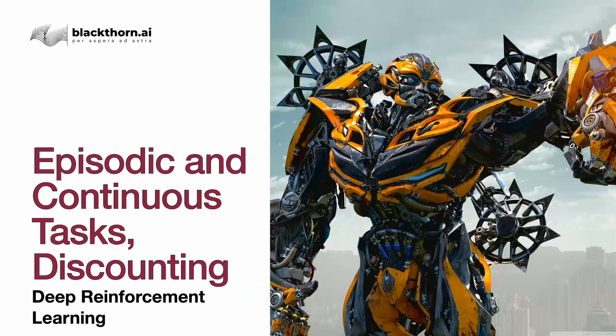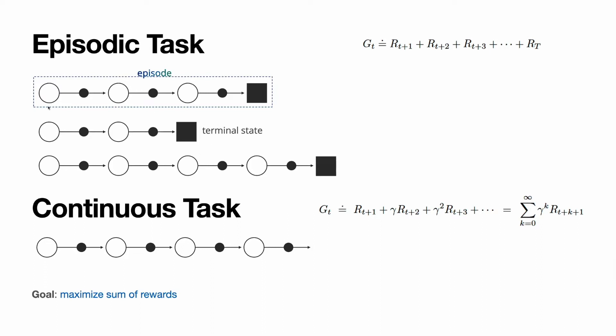Episodic and continuous tasks, and what is discounting? Episodic tasks have initial and terminal states, and all the interaction of agent and the environment is split into episodes.